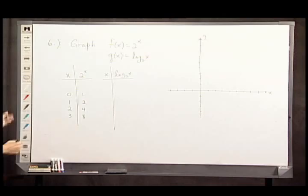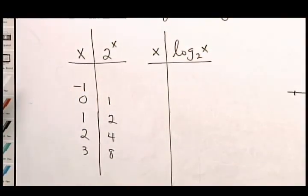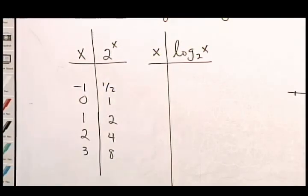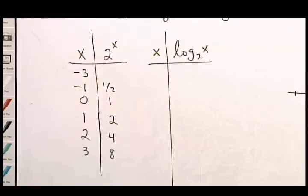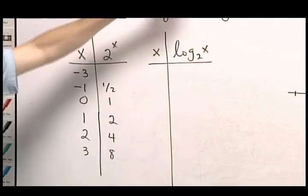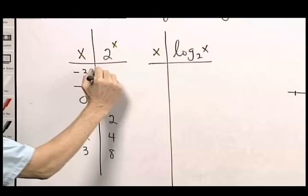Those are easy enough to come up with. I also want to venture into the negatives a little. Negative 1 means you have 1 factor of 2, but it's in the denominator, so 1 half. I'm going to skip negative 2 and go to negative 3. This means that you have 3 factors of 2, but they're in the denominator, so you have 1 eighth.